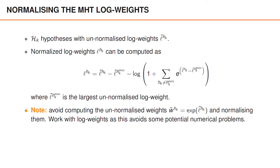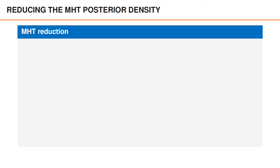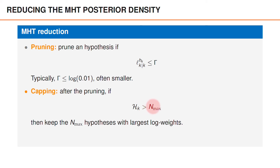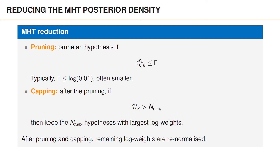The last part of hypothesis-oriented MHT is the reduction, where we reduce the number of hypotheses in the posterior density. First we do pruning of hypotheses whose log weight is smaller than some threshold capital gamma. Gamma is often set smaller than log of 0.01, quite often much smaller than that. If the log weight is really small, then the probability of the hypothesis is really small, so it makes sense to remove it and focus computational resources on hypotheses with higher probability. After pruning, if we still have too many hypotheses, we do capping and keep only the hypotheses with the largest log weights. After pruning and capping, it is important to renormalize the log weights such that they sum to log of 1.